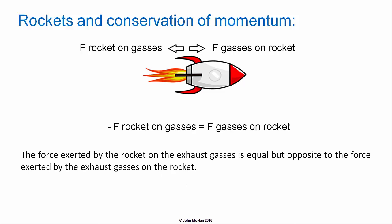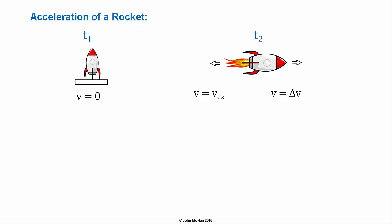The force exerted by the rocket on the gases is equal in magnitude but opposite in direction to the force exerted by the gases on the rocket. We can derive an expression for the acceleration of the rocket based on the principle of the conservation of momentum. Let's consider a rocket that is just being launched. At T1, just before the rocket is launched, the velocity is equal to zero. Whereas at T2, the velocity is equal to delta V, and the velocity of the exhaust is equal to V subscript EX. At T1, before launch, the mass of the rocket is equal to M1, which is the mass of the rocket plus the mass of unburnt fuel. At T2, the mass of the exhaust gases is going to be equal to delta M, and the mass of the rocket will now be M1 minus delta M.